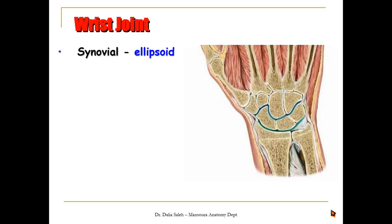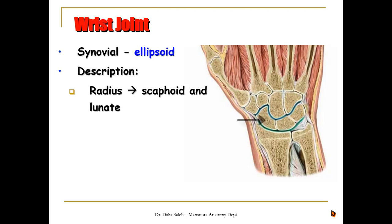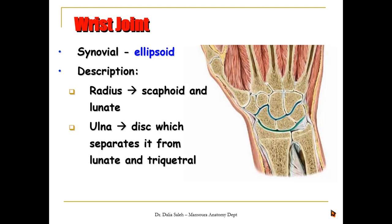The wrist joint is a synovial ellipsoid joint — a biaxial joint that allows flexion, extension, abduction, and adduction of the wrist. It is formed by articulation of the lower ends of both radius and ulna together with the bones of the first row of carpal bones. The lower end of the radius articulates with the scaphoid and lunate bones, while the lower end of the ulna is separated by the fibrocartilaginous disc from the lunate and triquetral bones. The disc is triangular in shape: its apex is attached to the styloid process of the ulna, and its base to the ulnar notch of the radius.